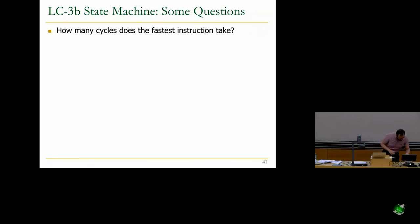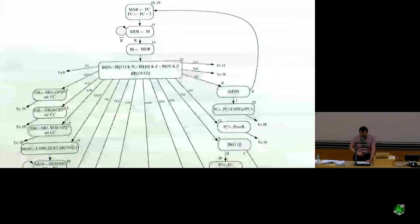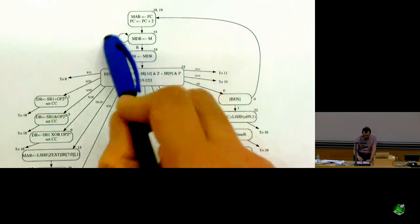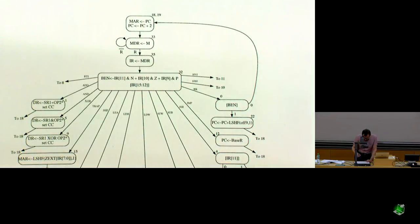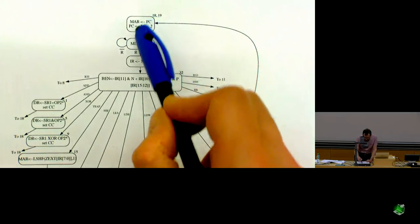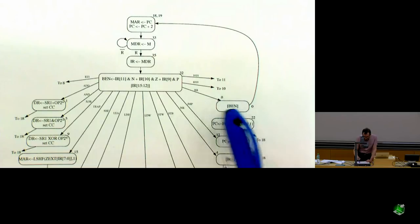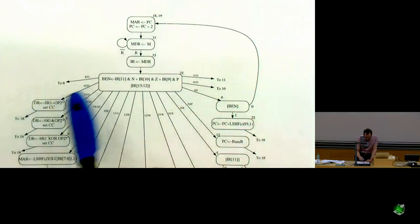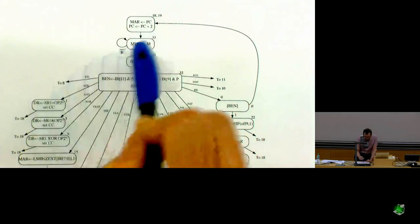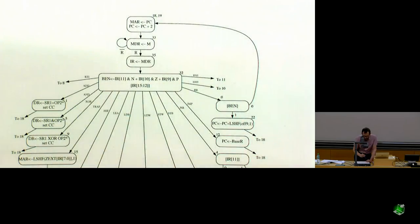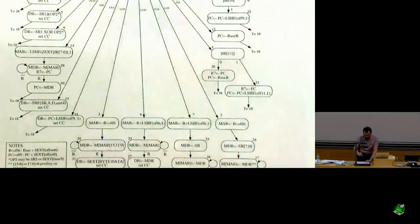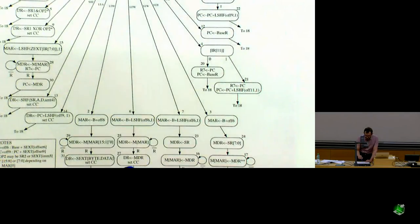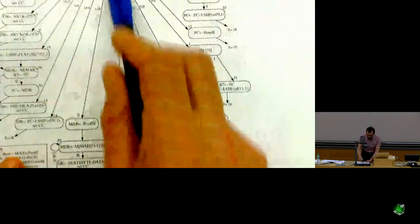How many cycles does the fastest instruction take? Looking at the state machine, each state is one cycle but you can loop in a state. One of the fastest instructions goes through about five states. Some instructions also take multiple memory cycles, so you can think of it as five cycles plus memory cycles. Load word is one of the slowest instructions — it does address computation, then a memory access where you wait for memory to become ready, and then returns to state 18. Load word does two memory accesses: one for the fetch and one for the actual memory access.